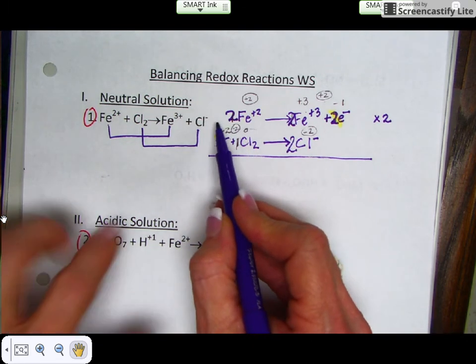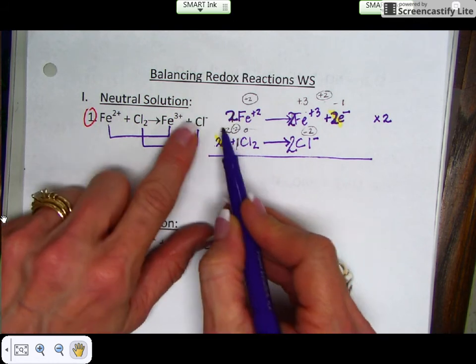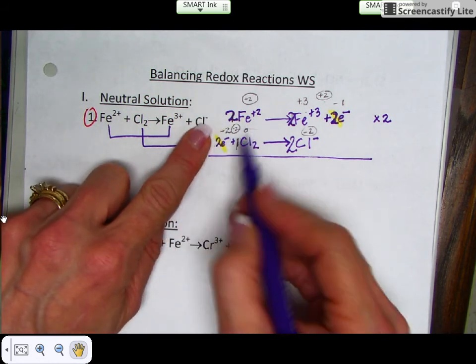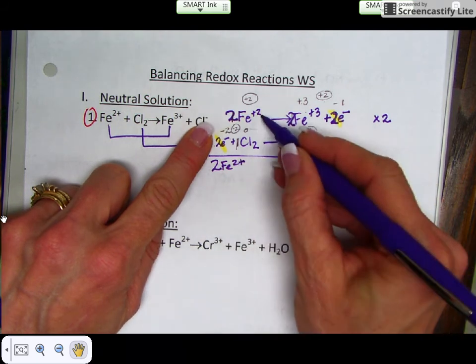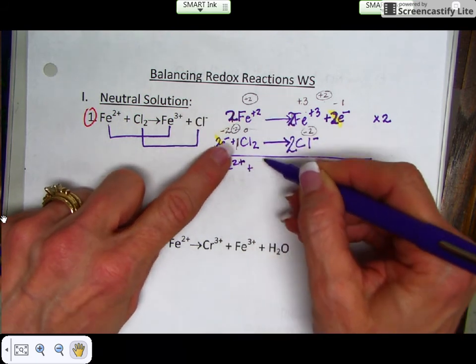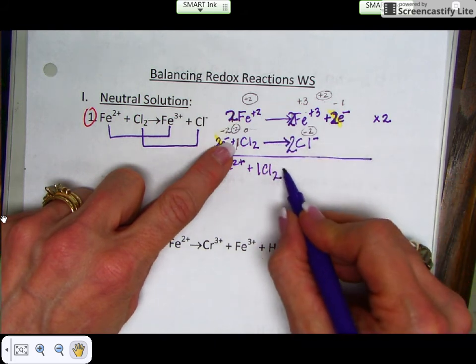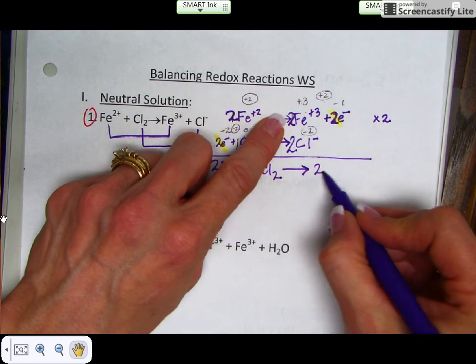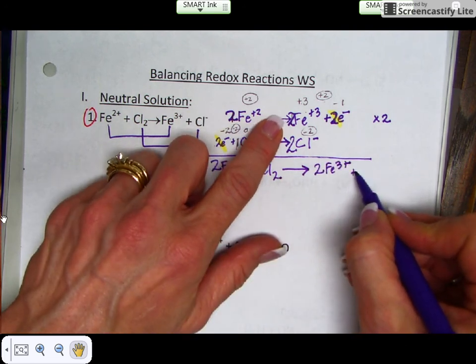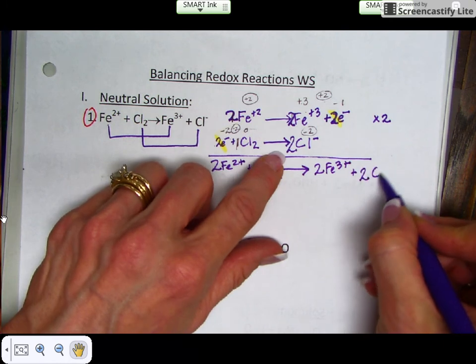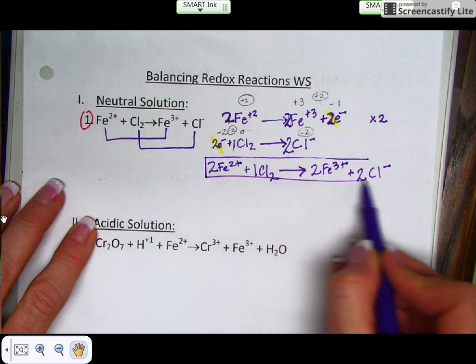So I always start and go left to right, and I start with my top and then go to the bottom half reaction. So 2Fe²⁺ ions plus 1Cl₂ yields 2Fe³⁺ ions plus 2 chloride ions. This is your final answer.